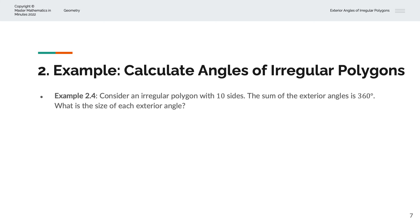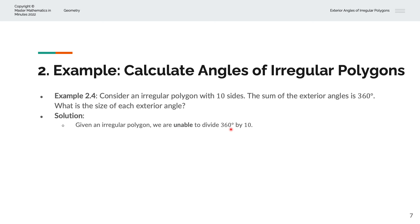In the fourth example, we are asked to consider an irregular polygon with 10 sides, given that the sum of the exterior angles is 360 degrees, and asked to calculate the size of each exterior angle. Because this is an irregular polygon, we are unable to divide 360 degrees by 10, since the sides are not equal in length and therefore the exterior angles will not be identical. So we are unable to find the size of each individual exterior angle.